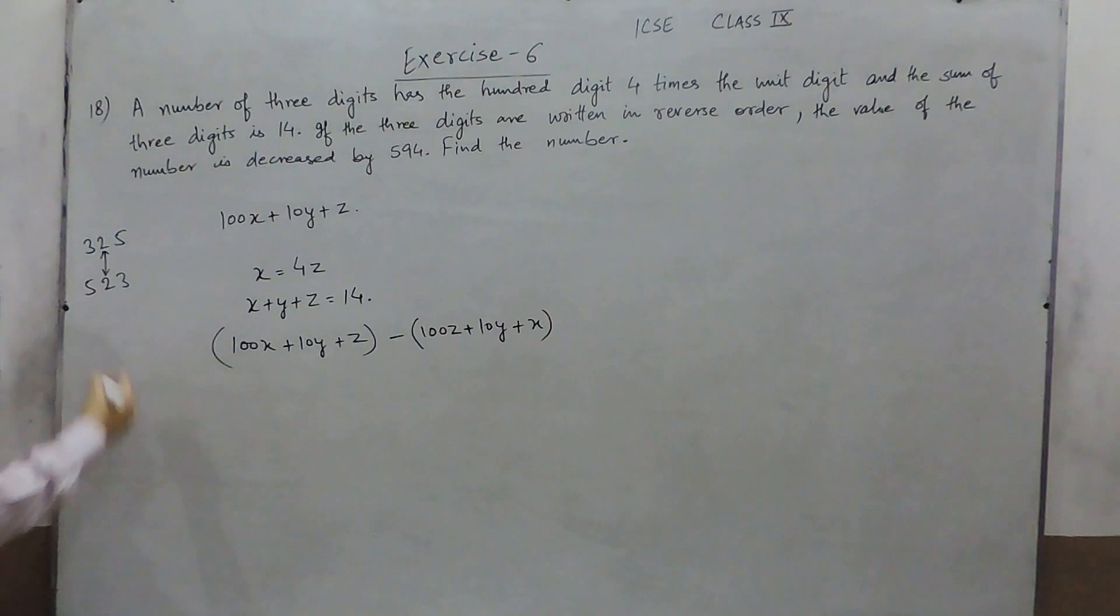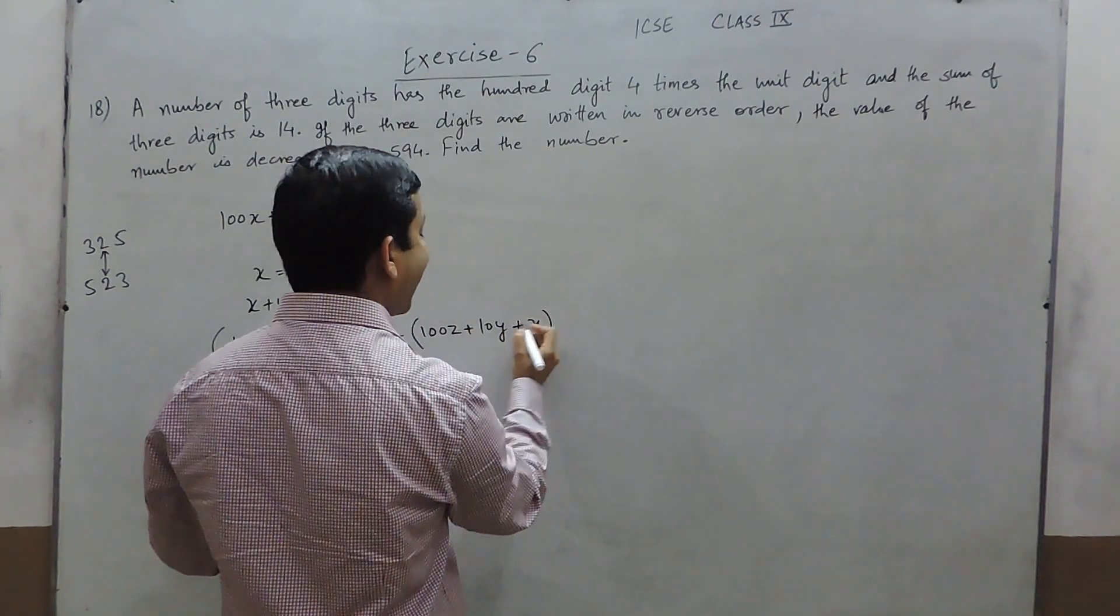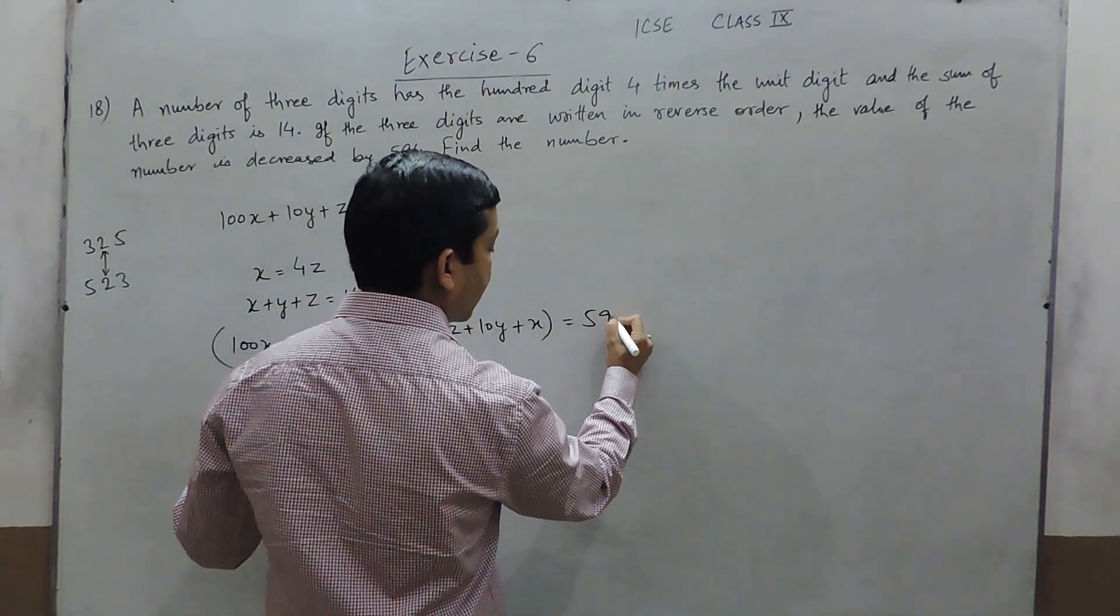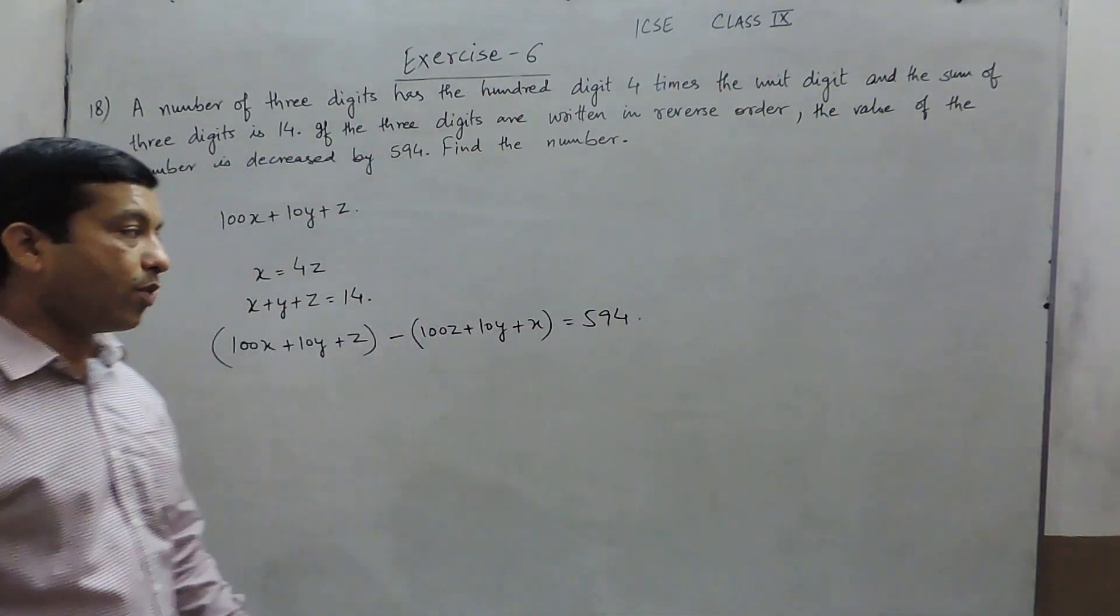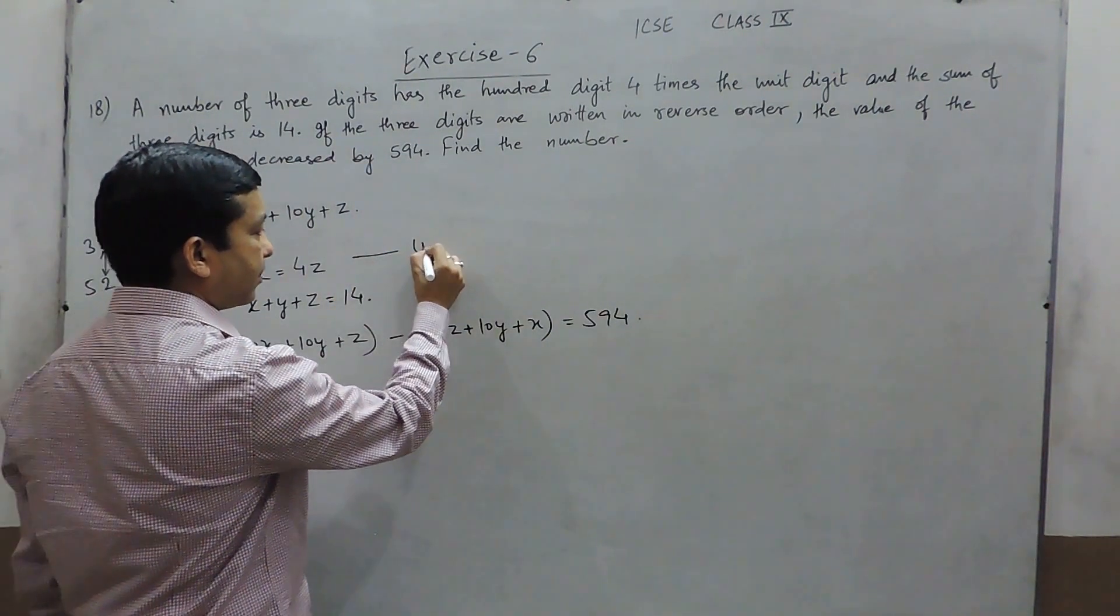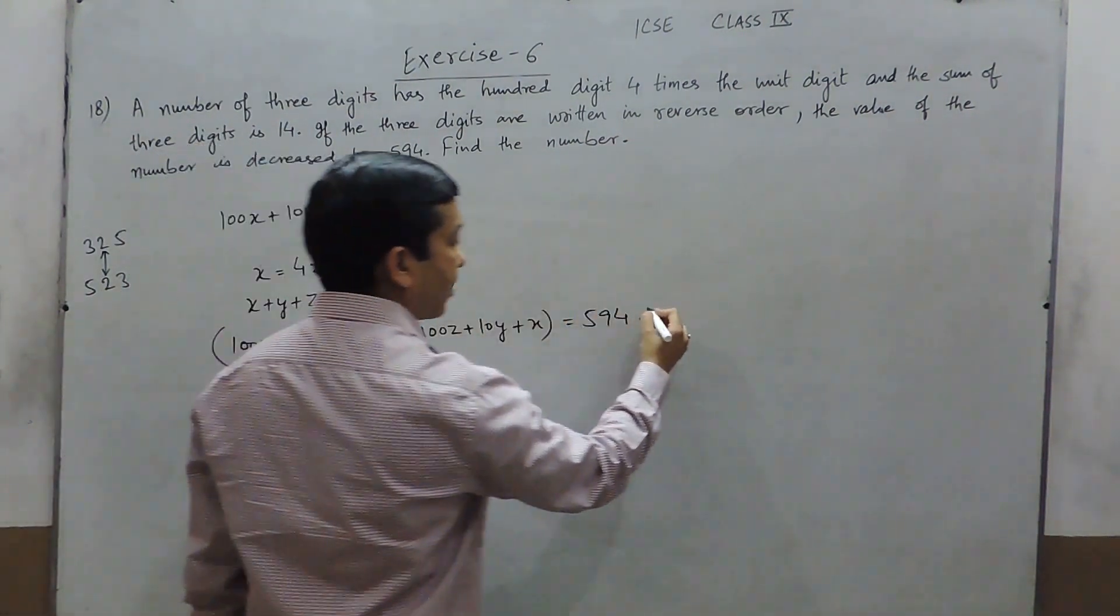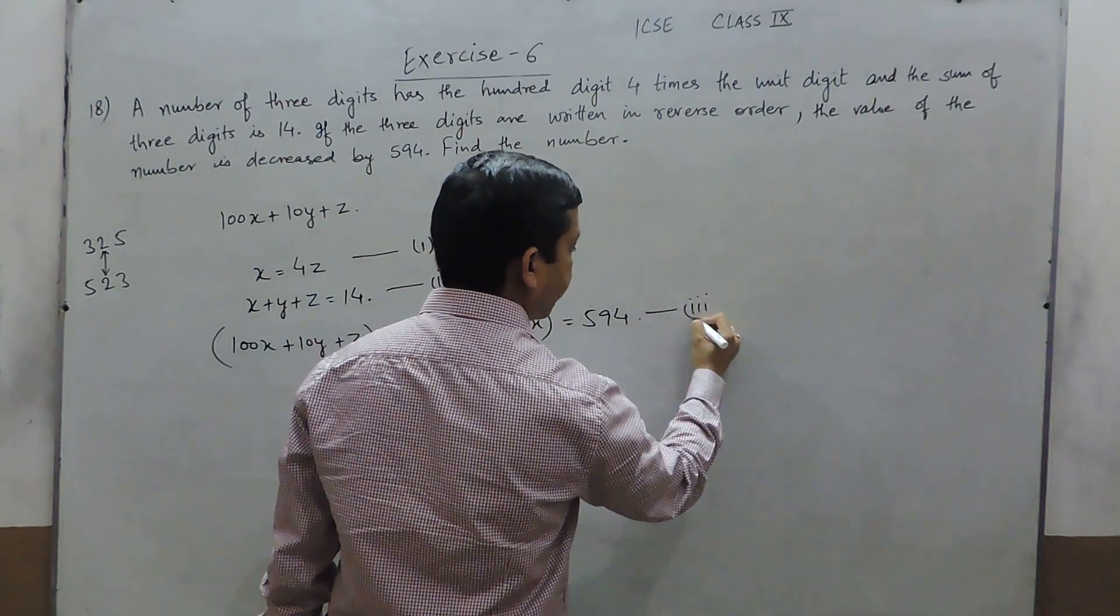The 10th digit will remain as it is and these two digits will replace themselves. This number is decreased by 594 which means that the difference is 594. So this is the first equation, the second equation, and the third equation.